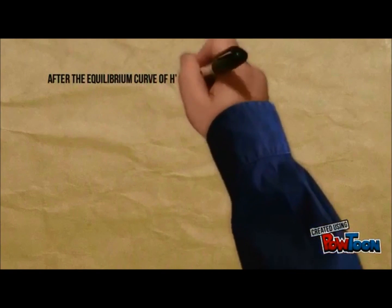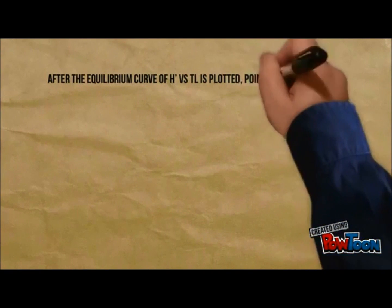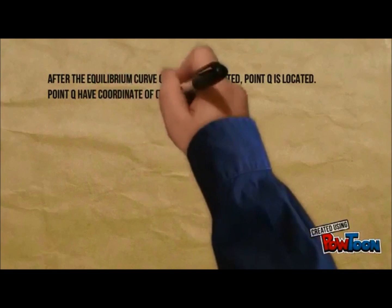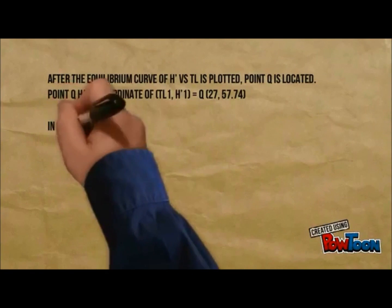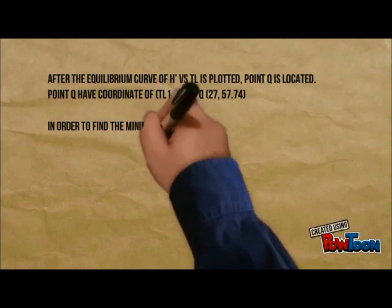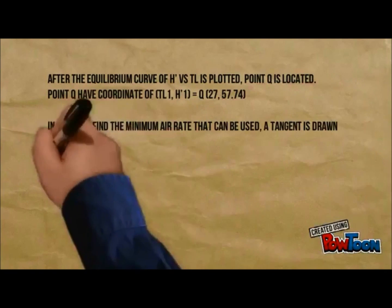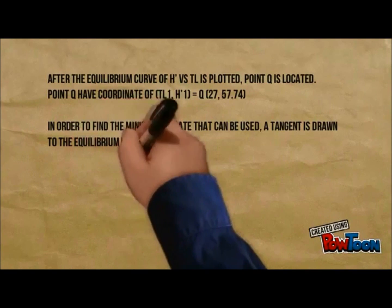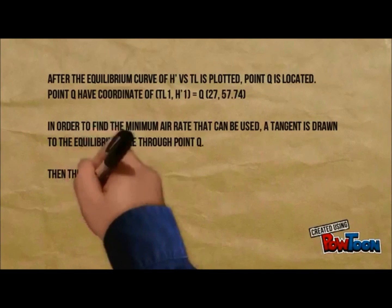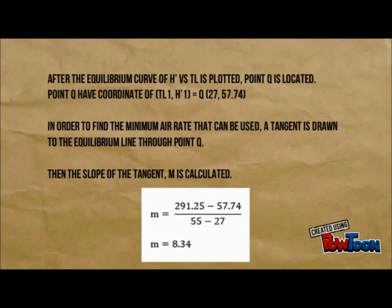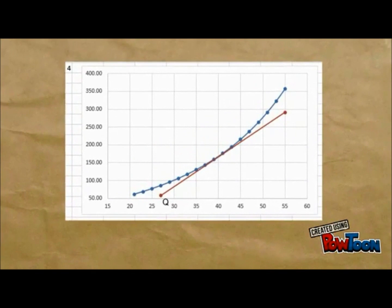After the equilibrium curve of h prime versus Tl is plotted, point Q is located. Point Q has coordinates of Tl1 and h prime 1, equal to 27 and 57.4. In order to find the minimum airway that can be used, a tangent is drawn to the equilibrium line through point Q. This is an example of the tangent drawn to point Q.